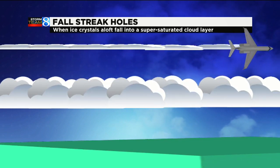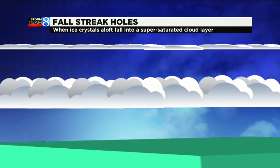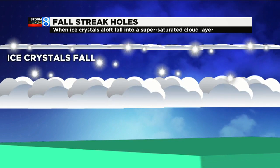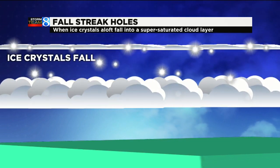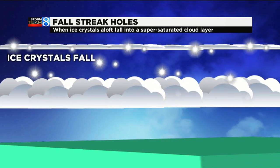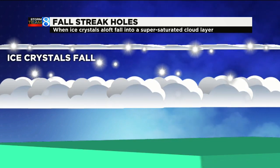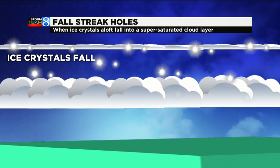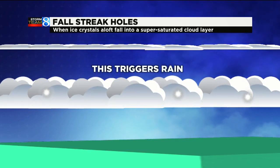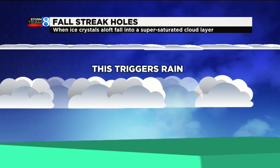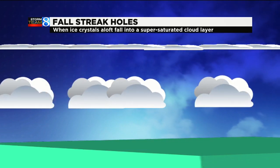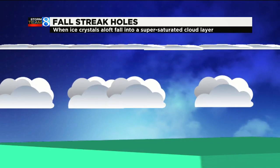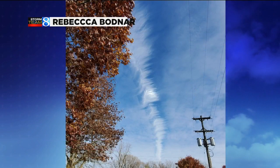So that happens at high altitudes, and that contains some ice crystals. And if conditions are right, the ice crystals will fall into the lower cloud bank. And if that lower cloud bank is made of supercooled water droplets, then immediately when the ice crystals hit the cloud, it triggers rain and it opens up a little hole in the clouds. Oftentimes the rain doesn't actually make it to the ground.